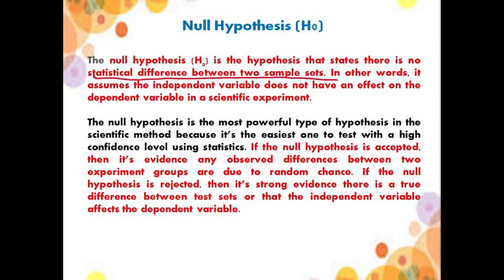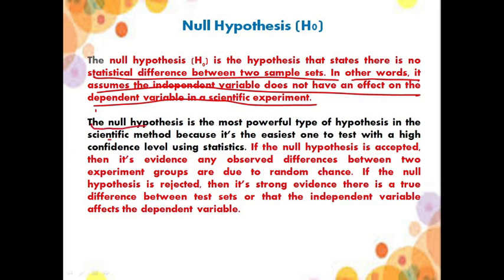In other words, it assumes that the independent variable does not have an effect on the dependent variable in a scientific experiment. Null hypothesis is the most powerful type of hypothesis in the scientific method because it is the easiest one to test with a high confidence level using statistics.